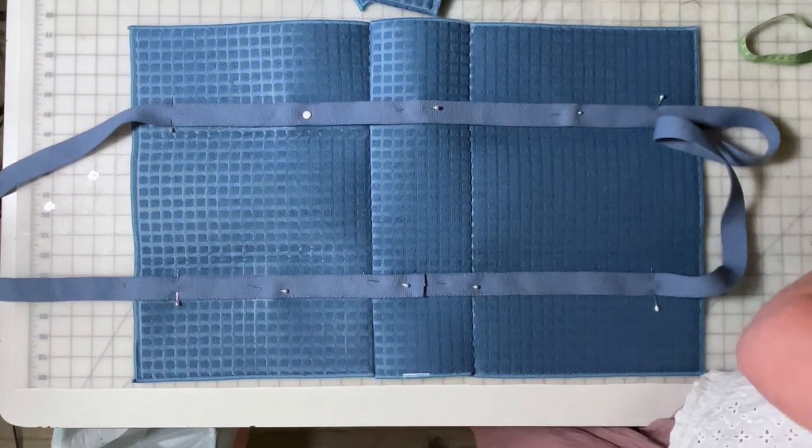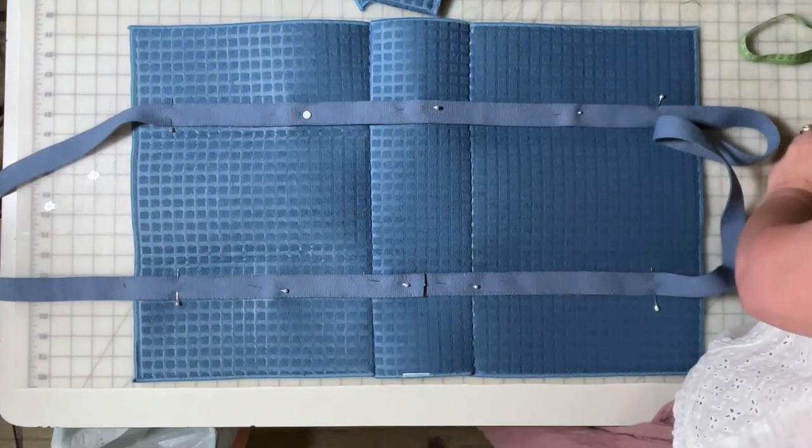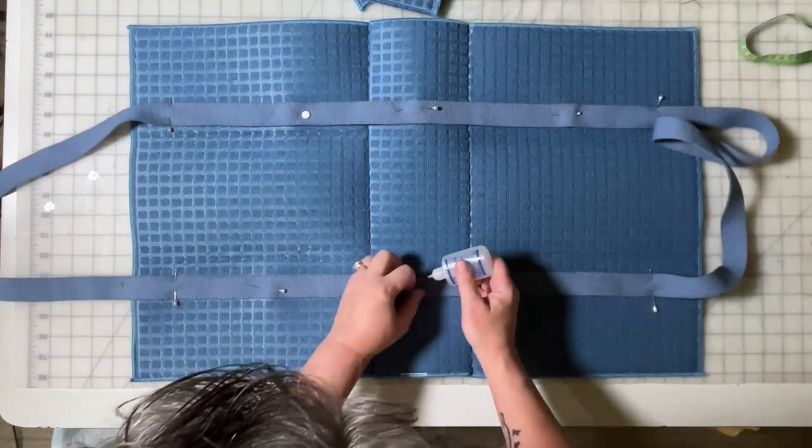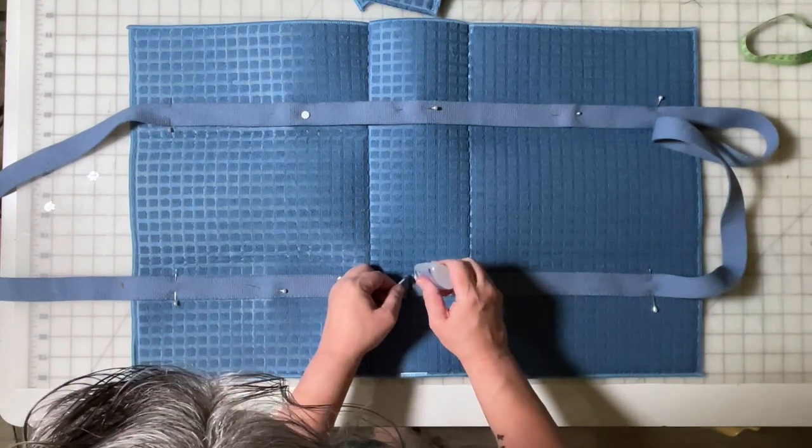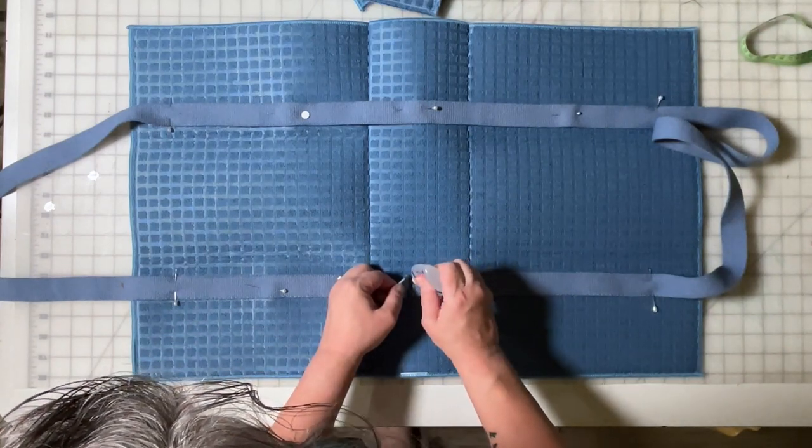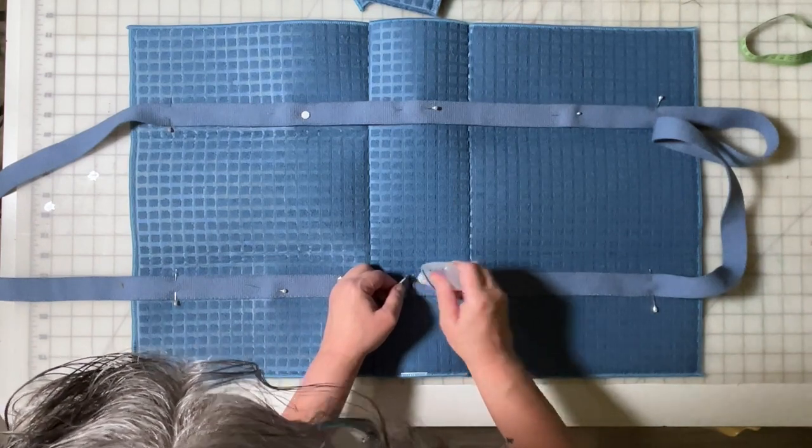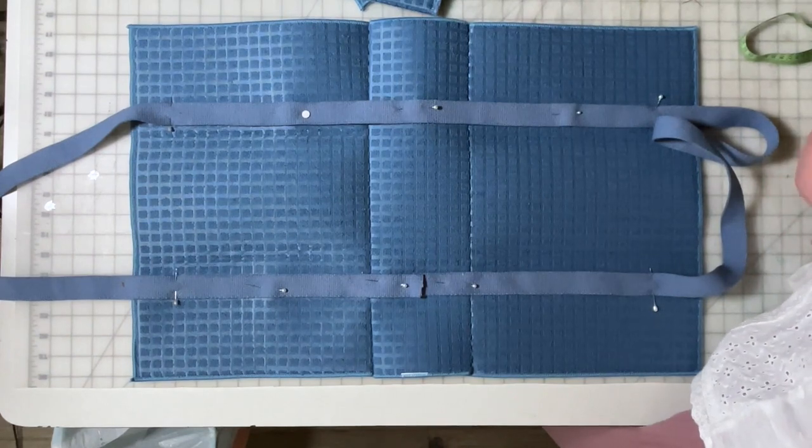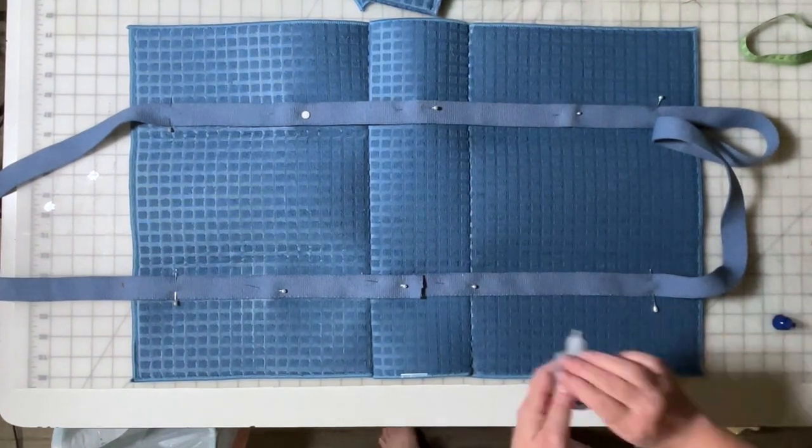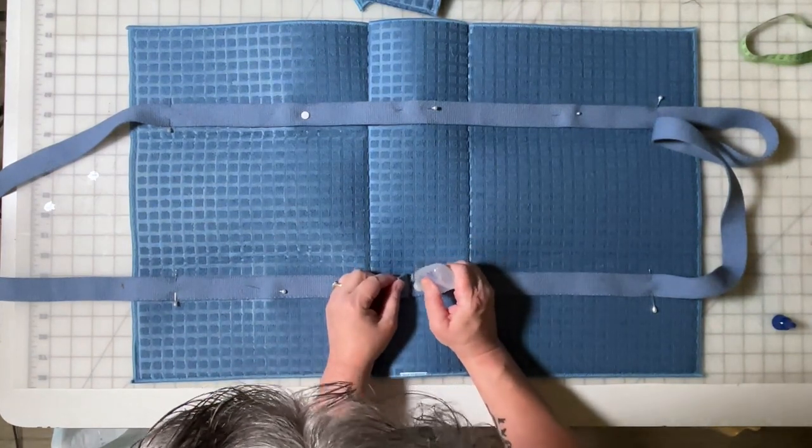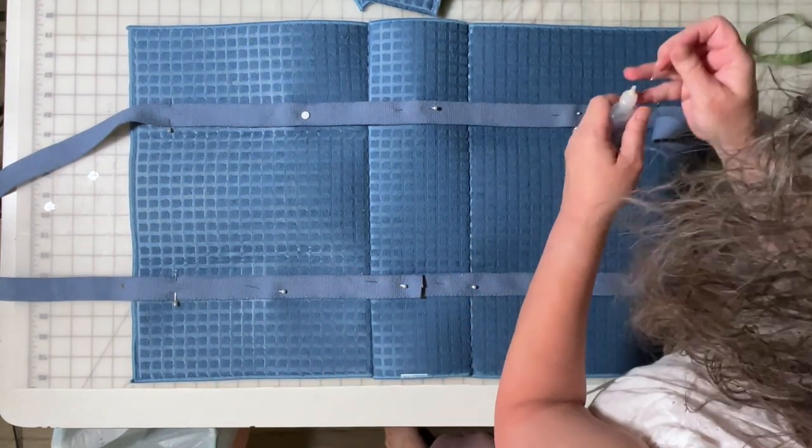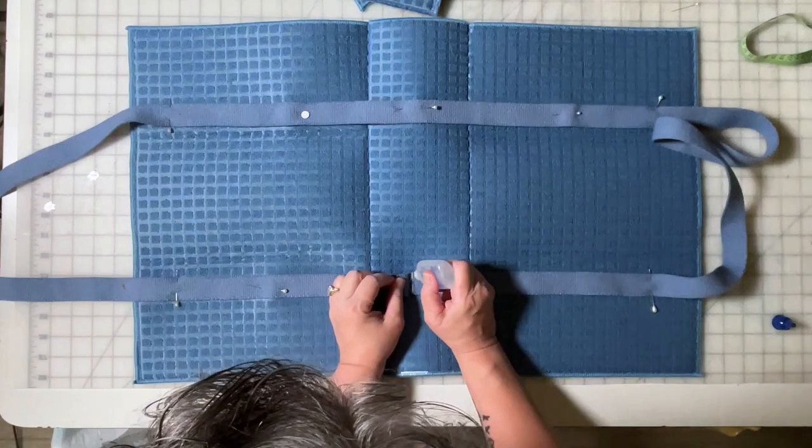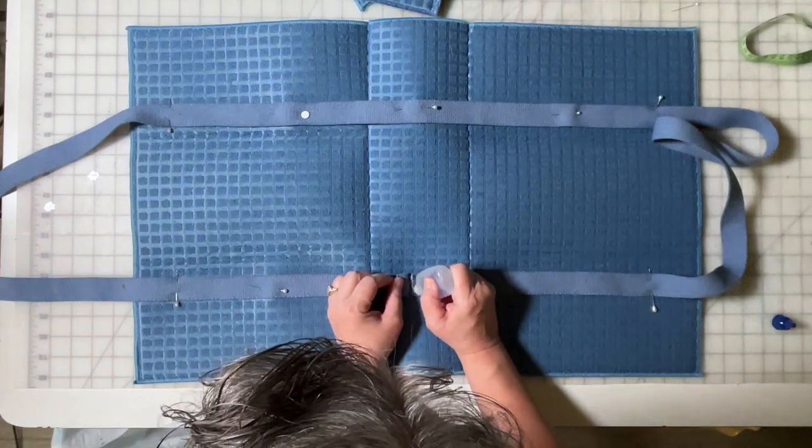That one's not open yet. But for those that don't know, fray check is like a fabric glue, helps prevent the edges from unraveling. That one might be empty. Okay. Third time's the charm, maybe?